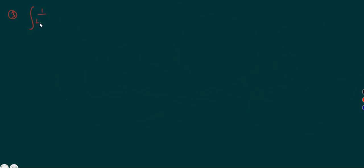Next problem: integration of 1 by (4 plus 5·sin x) dx. This is in the form of integration 1 by (a plus b·sin x) dx. We know the working rule: put tan(x/2) equals to t.